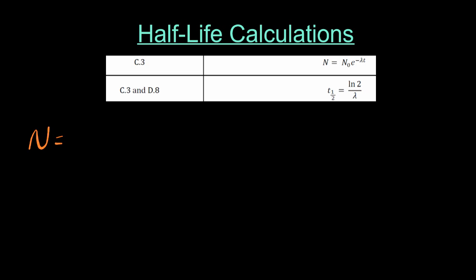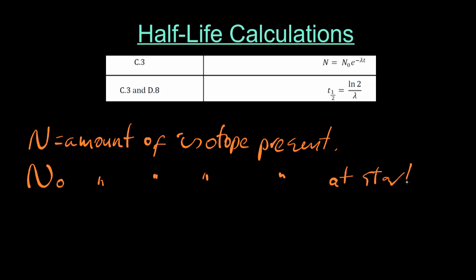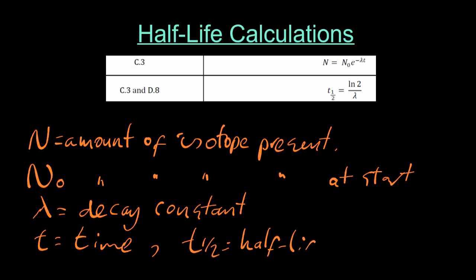Now the IB won't tell you what those symbols mean in the data booklet, so you have to memorize them. N is the amount of isotope present. N sub zero is the amount of isotope present at the start. That lambda is the decay constant, and it seems that you need to know no more than the fact it's the decay constant. T, that's the time, and T half, that's the half-life.